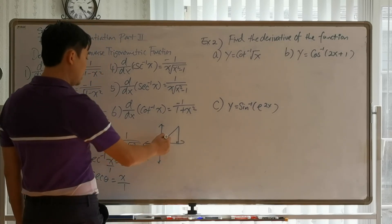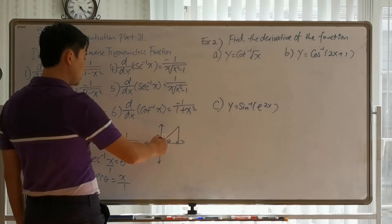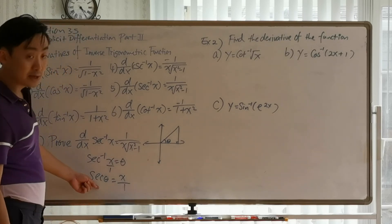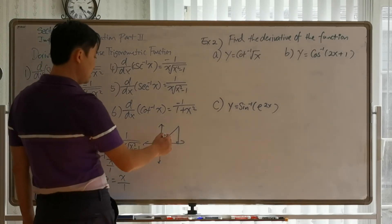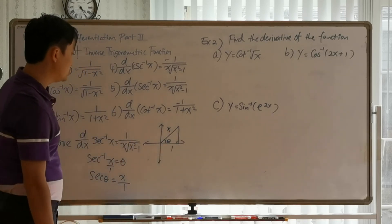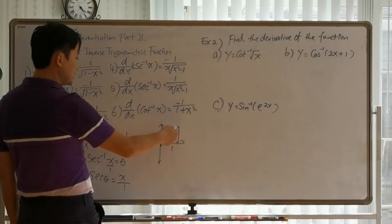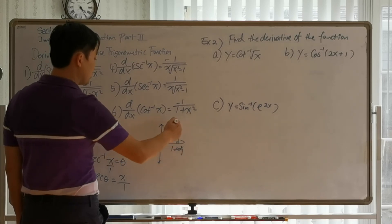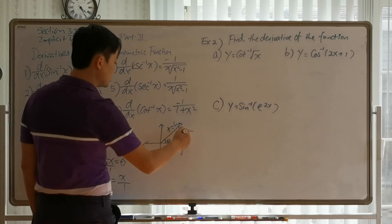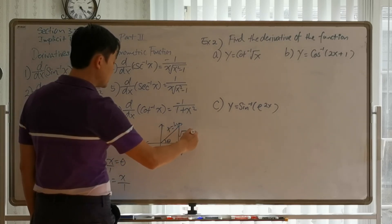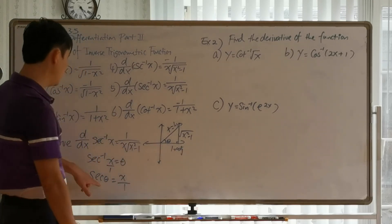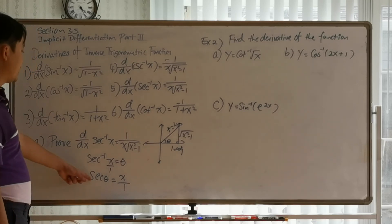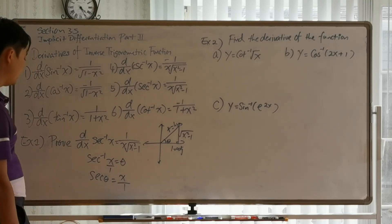Drawing the right triangle diagram, theta is the angle between the terminal side and the x-axis. Secant is always hypotenuse over adjacent, so hypotenuse is x and adjacent is 1. The opposite side is missing, but we can find it using the Pythagorean theorem: opposite equals the square root of x squared minus 1.